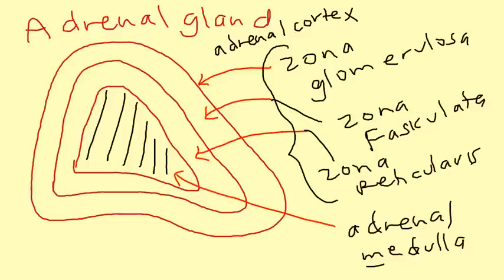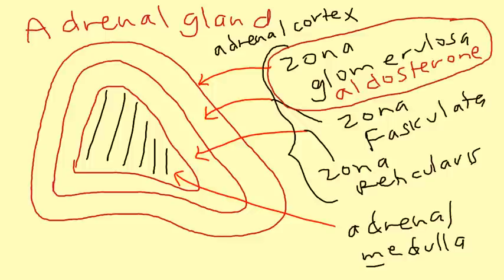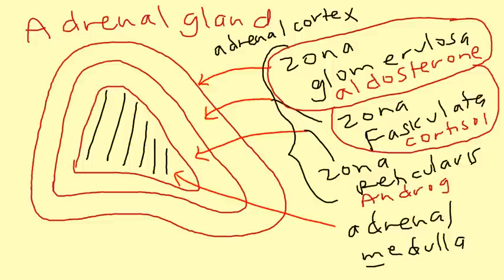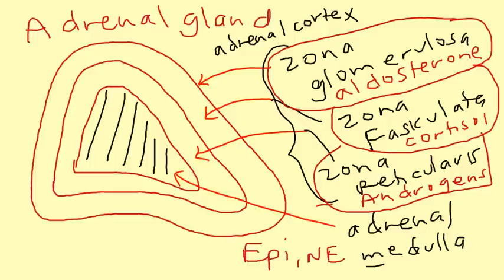What does each section of the adrenal gland secrete? The zona glomerulosa secretes aldosterone. Zona fasciculata secretes cortisol. Zona reticularis secretes androgens. And the adrenal medulla secretes epinephrine and norepinephrine.